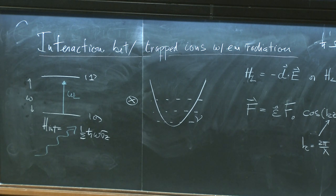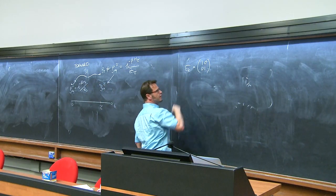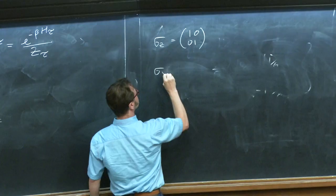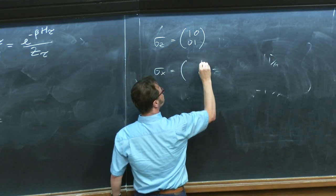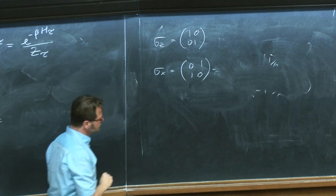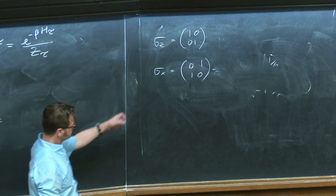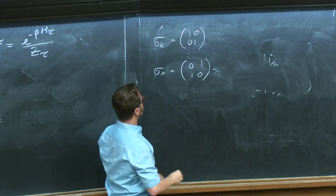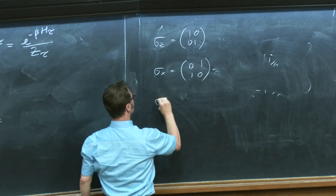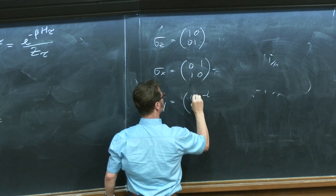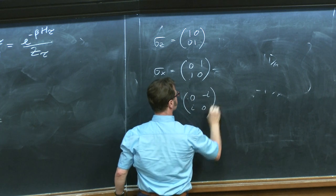We describe a spin one-half or two-level system, so we just need a two-by-two matrix. That's sigma_Z. Then we have sigma_X, which couples these two states — if you have a sigma_X term, you have a coupling between these two eigenstates. Or you can have a sigma_Y term.